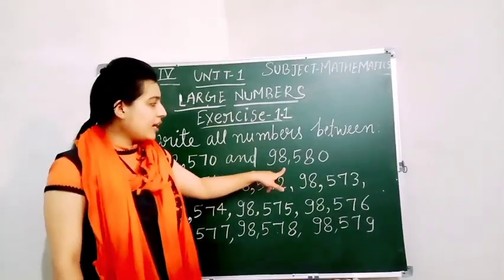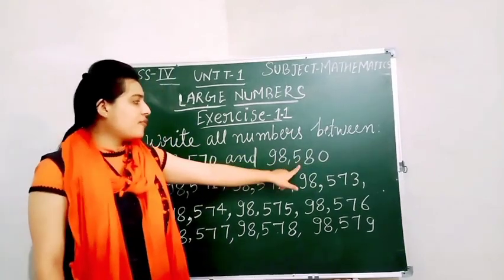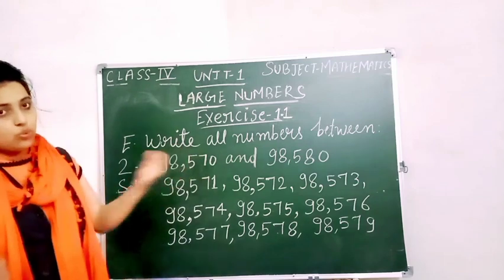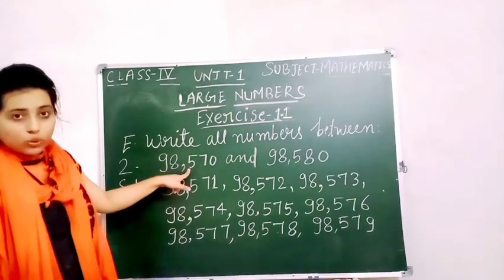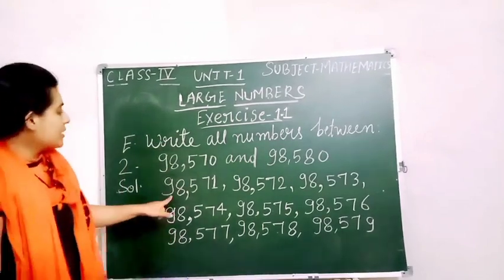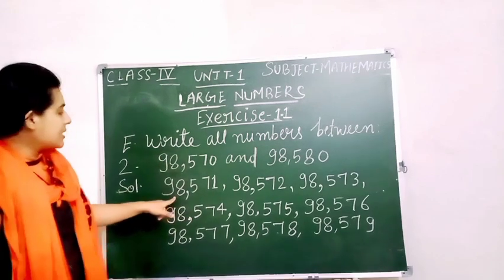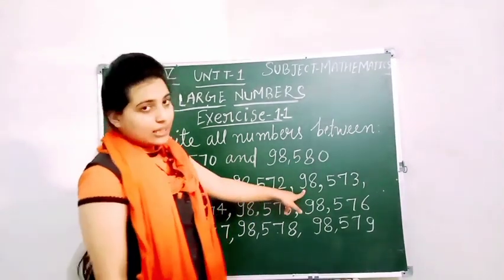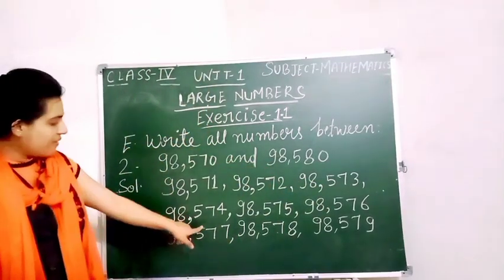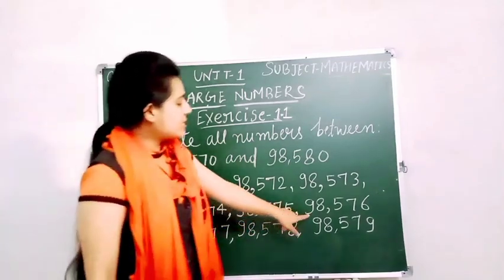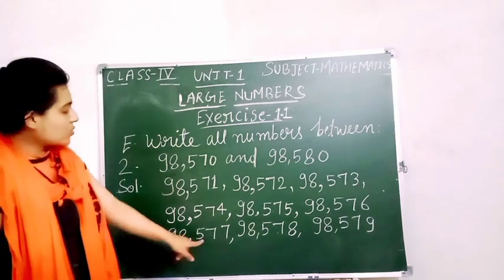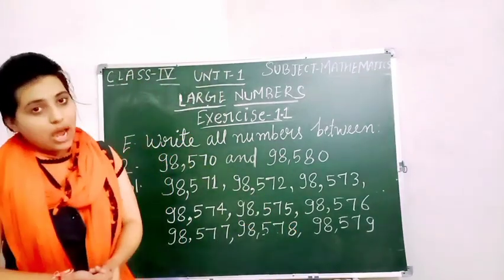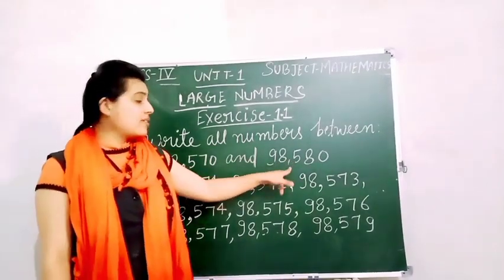The second question is numbers between 98,570 and 98,580. We will not include 98,570 and start from 98,571. The numbers between are: 98,571; 98,572; 98,573; 98,574; 98,575; 98,576; 98,577; 98,578; 98,579. We will not include 98,580.